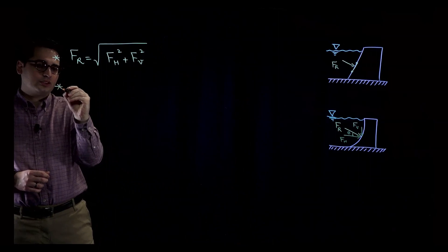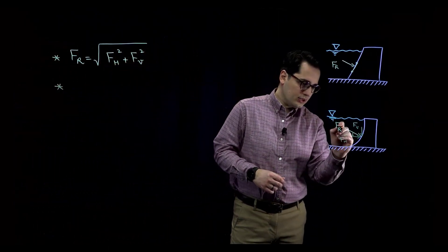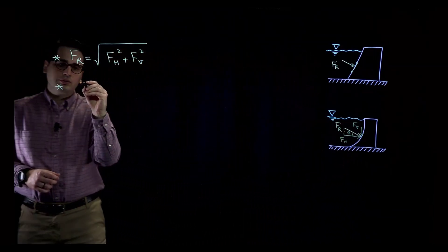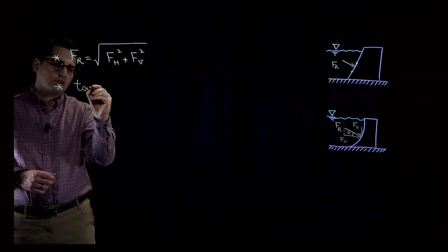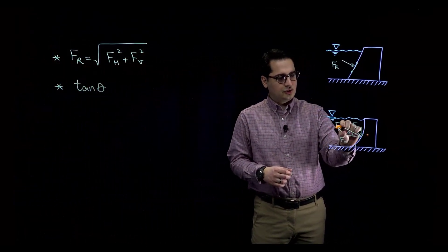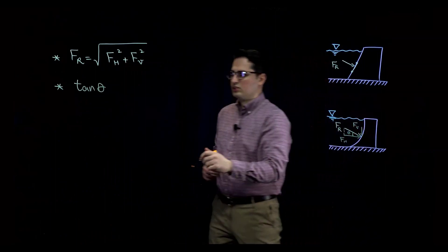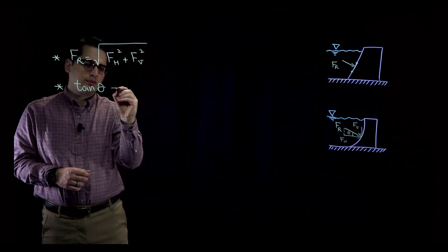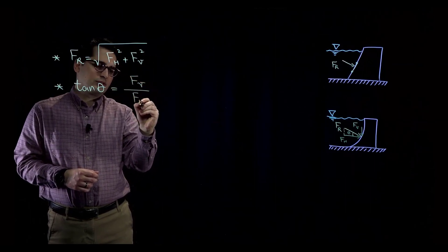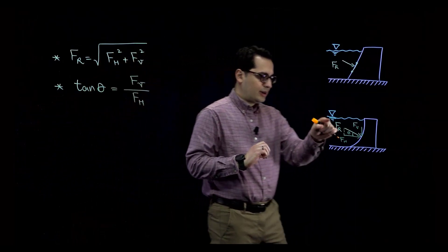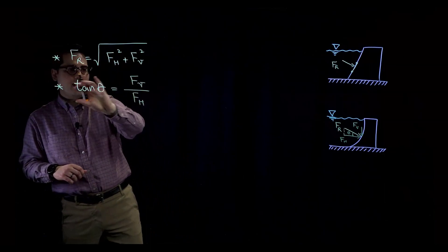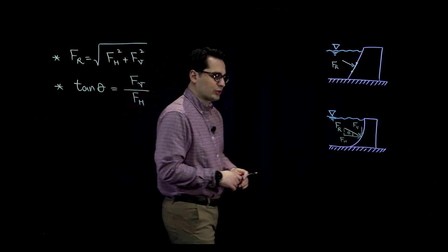If you want to find the direction, theta forms a triangle, and the tangent of theta equals the opposite side F sub V divided by the adjacent side F sub H. So theta equals the arctangent of F sub V over F sub H. This gives us the line of action of the resultant force F sub R, so we have both the magnitude and direction.